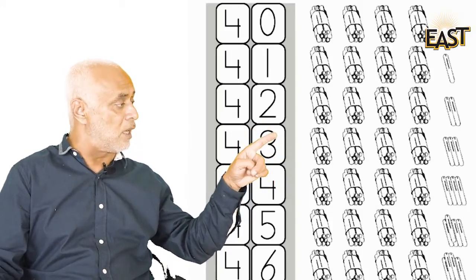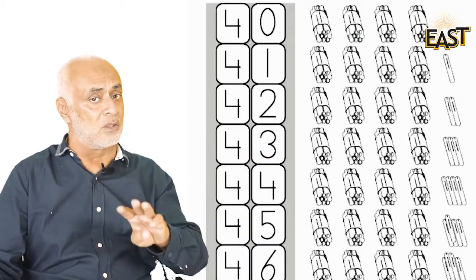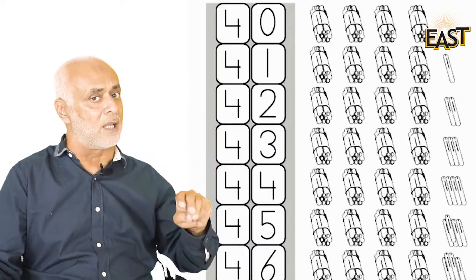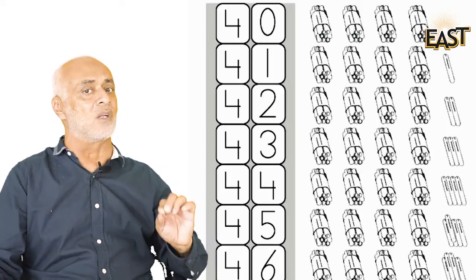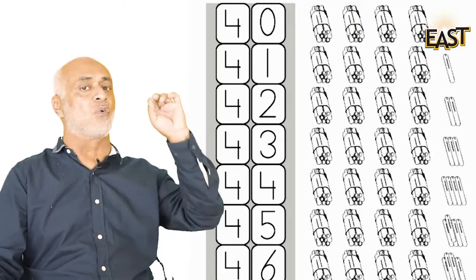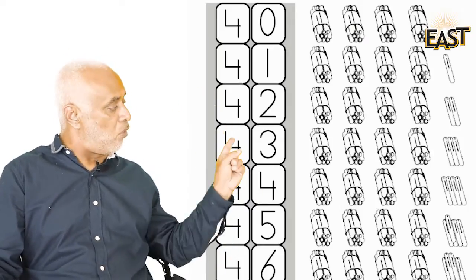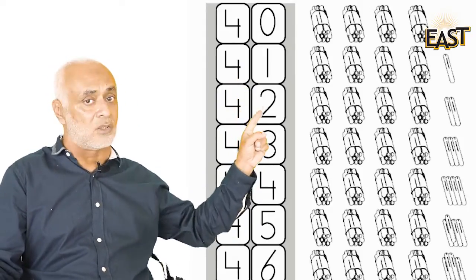One and two and three, we have three. So four tens and three is forty-three. Forty-three.